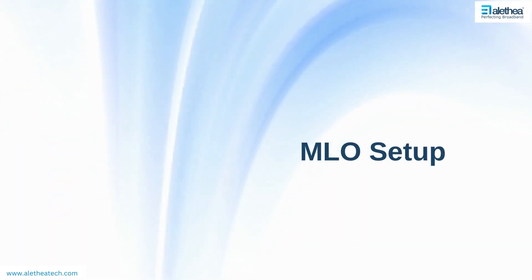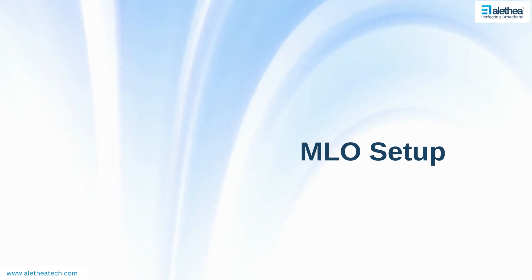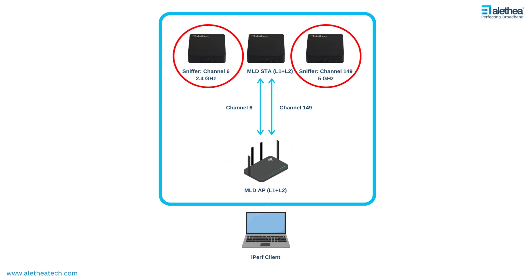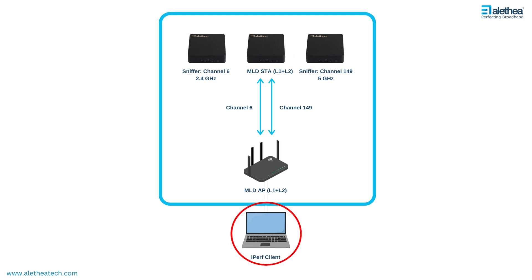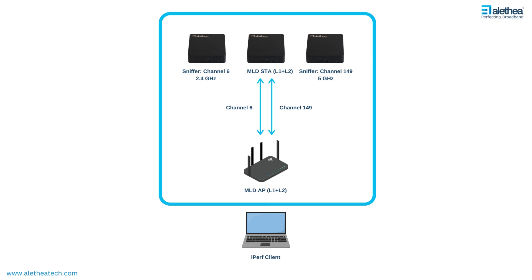Let's look at the test setup to check MLO. We have an AP and a ViCheck Wi-Fi 7 golden client along with sniffers, one per link. We also have the iPov client connected to the AP to run traffic. Using this setup, we would run a peak throughput test with one link and two links and see the benefit.